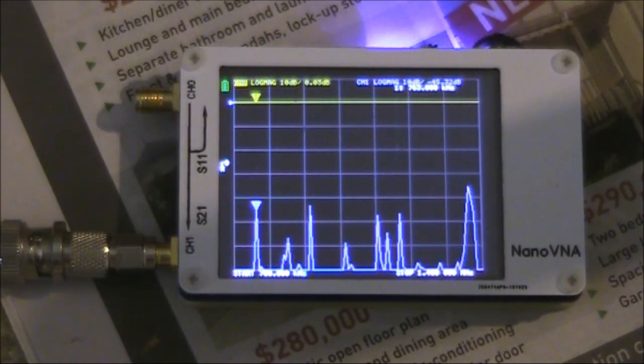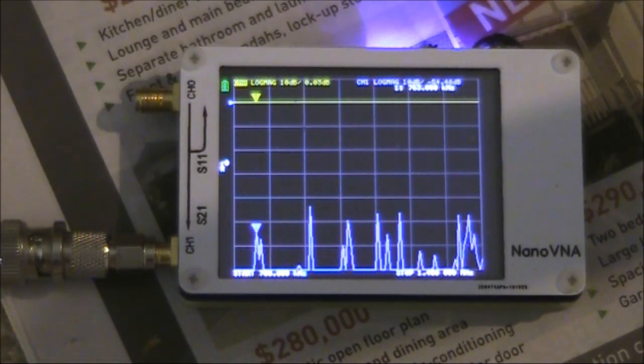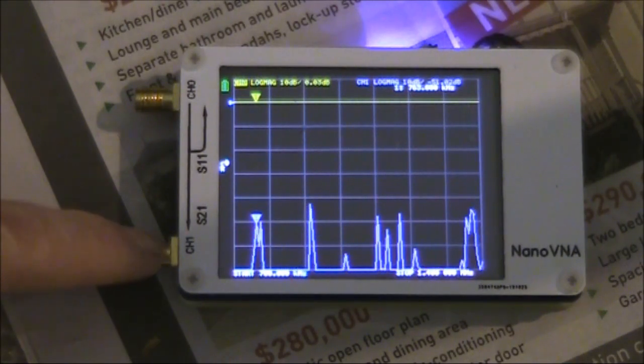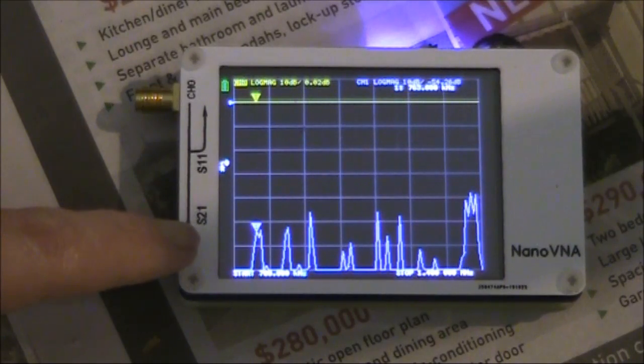Did you know that you can use your Nano VNA as a crude band scope? Here's how I did it. I apply RF to the channel 1 position, then I set the frequency limits.